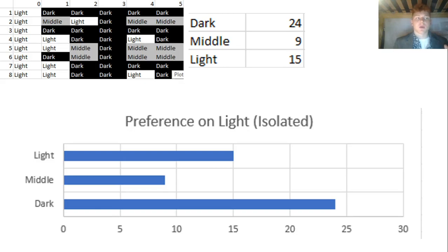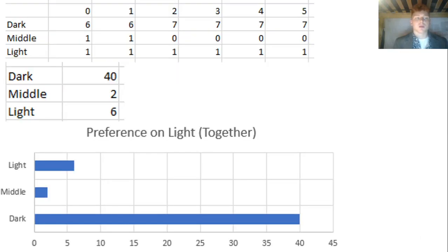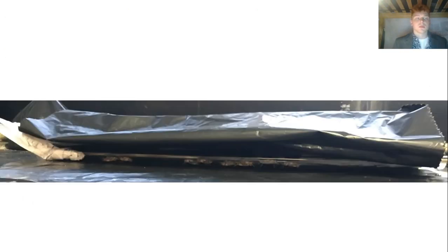This time I started them all in light rather than in dark for isolation and found that they still heavily prefer dark. Then when I put them in groups, I started more in dark this time than in light, and once again we see that they prefer darkness over light. This is shown here as a large group of crickets are all in the dark third of the glass tube.